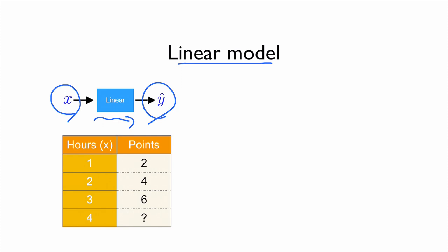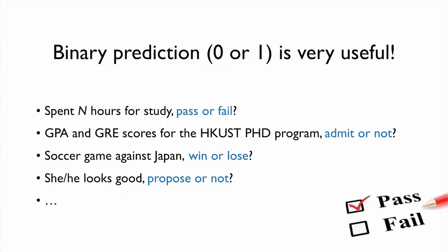In our case examples, we both use real numbers as x and also predict real value, real numbers. However, in our life, the binary prediction, which is 0 or 1, can be very useful.